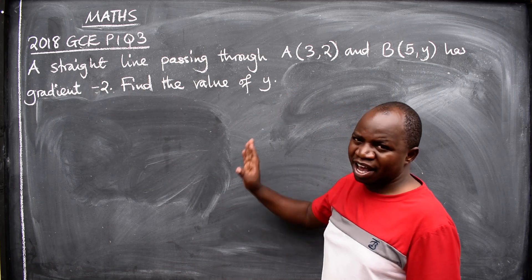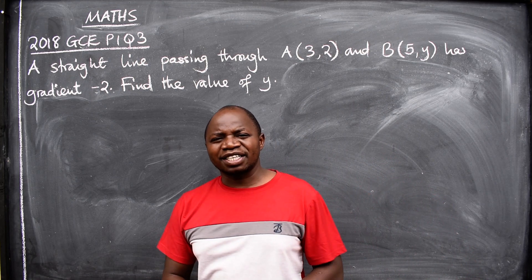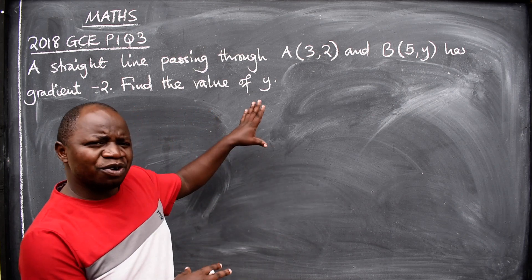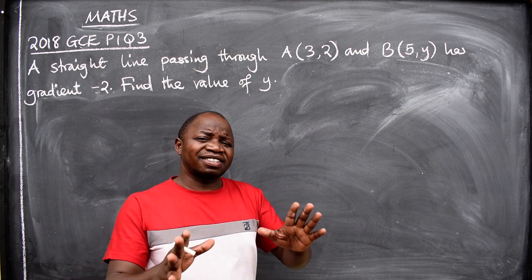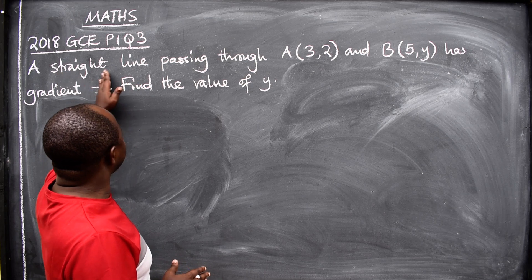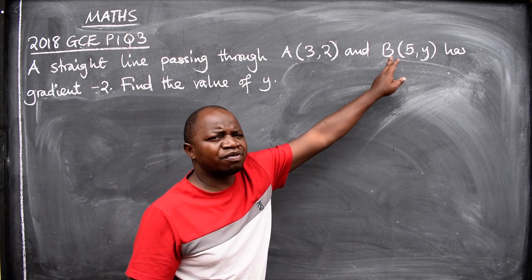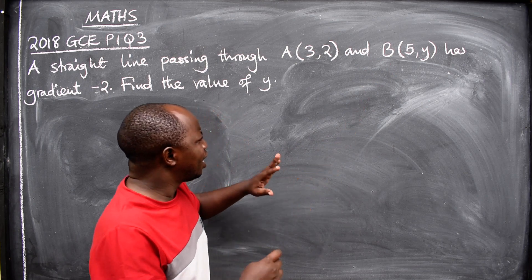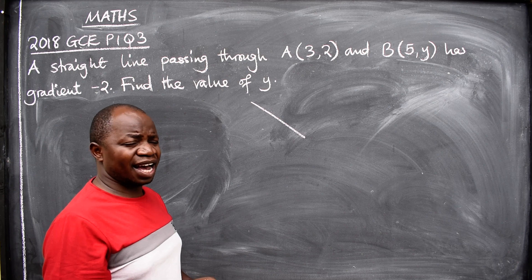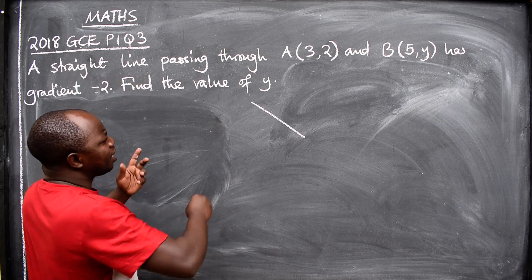The question is from coordinate geometry. Now, where are you going to start from? Understand the question first. We are told that this is a straight line passing through two points.